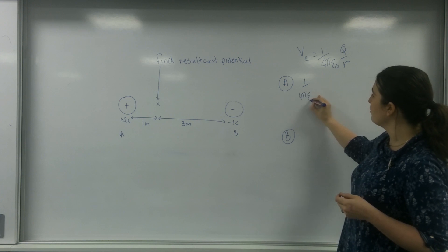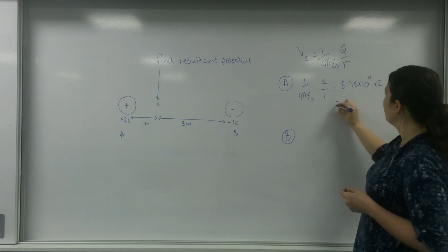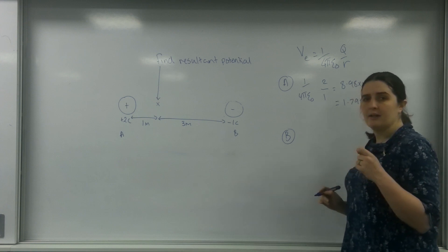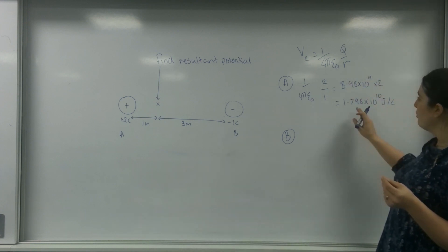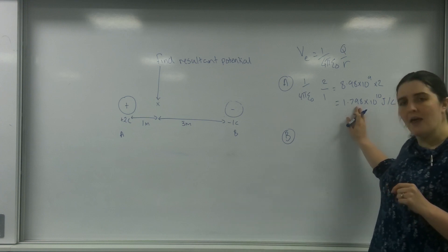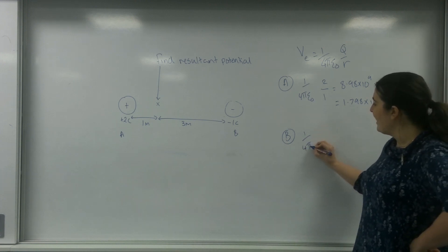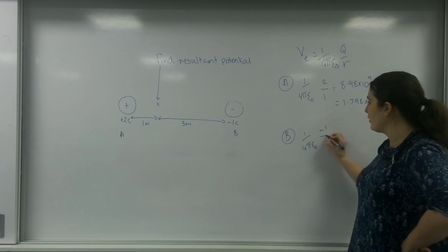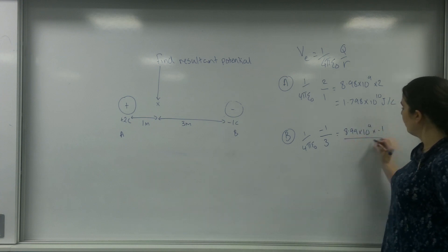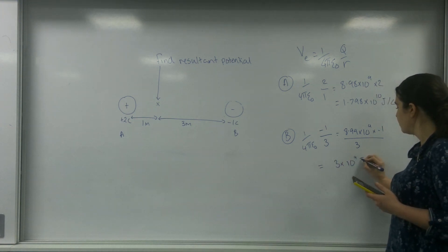For the 2 coulomb charge, I use 1 over 4 pi epsilon-0 times 2 over 1, which gives 8.99 × 10⁹ × 2 = 1.798 × 10¹⁰ joules per coulomb. Now for the minus 1 coulomb charge at point B, it's 1 over 4 pi epsilon-0 times minus 1 over 3, giving 8.99 × 10⁹ × (−1) / 3 = −3 × 10⁹ joules per coulomb.